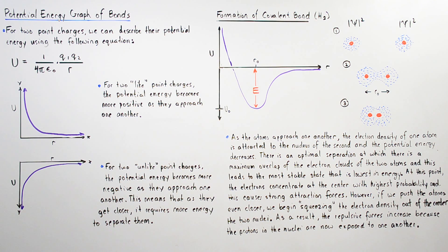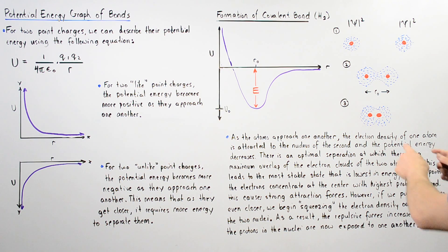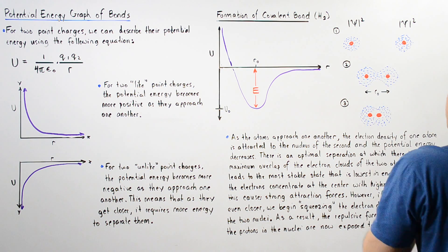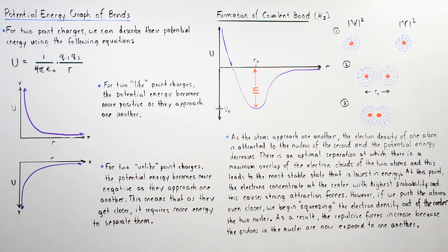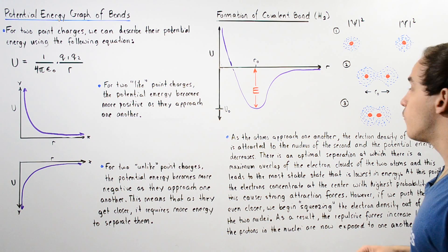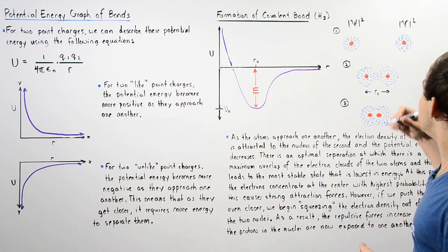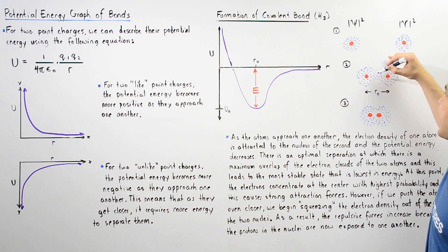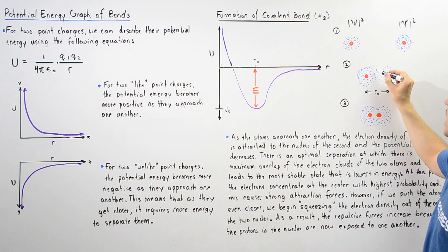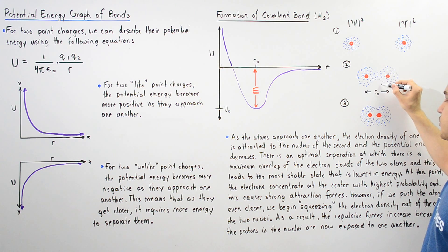At this point, the electrons concentrate at the center between our two protons — between our two nuclei — with the highest probability, and this causes the strongest possible attraction forces between the protons in the two nuclei of the individual atoms and this center region.